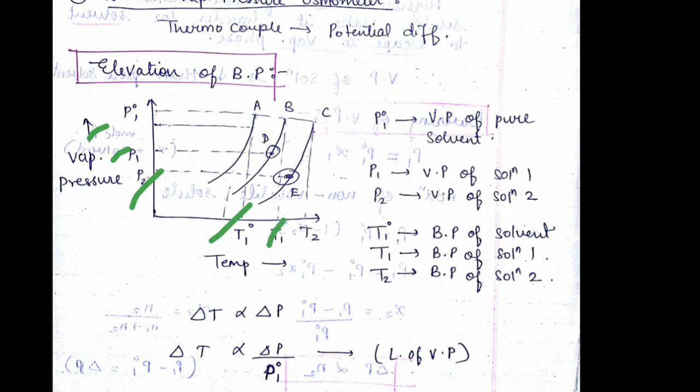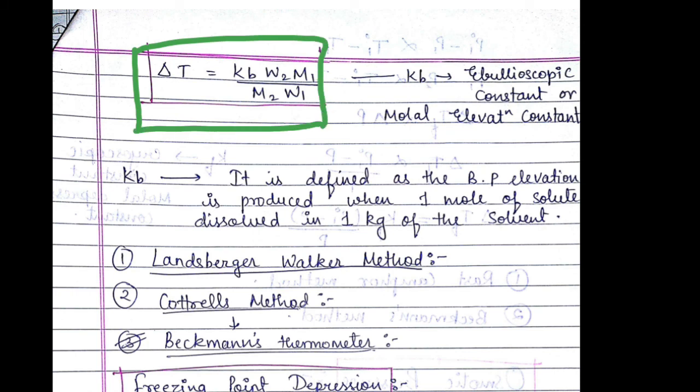Boiling point of pure solvent, boiling point of solution 1, boiling point of solution 2. The equation which is derived is: ΔTᵦ is equal to Kᵦ W₂ M₁ upon M₂ W₁. Kᵦ is ebullioscopic constant or molar elevation constant.